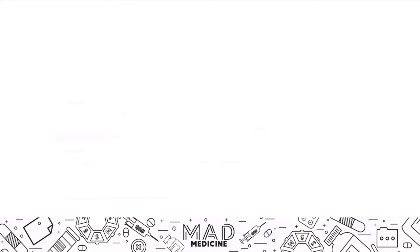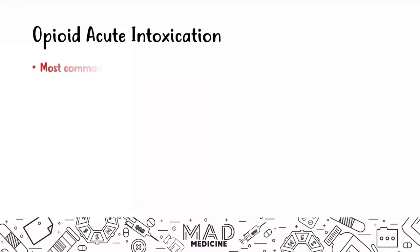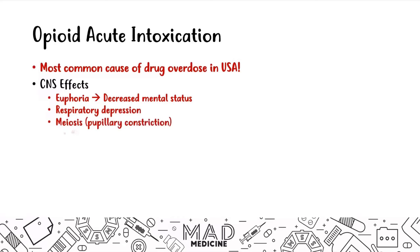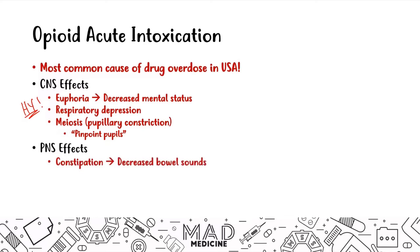With acute opioid intoxication — the most common drug overdose in the United States — the clinical presentation includes the CNS effects of euphoria, respiratory depression, and miosis (pupillary constriction and pinpoint pupils), as well as PNS effects of constipation and decreased bowel sounds. You need to be able to differentiate someone intoxicated from opioids versus someone withdrawing from opioids.